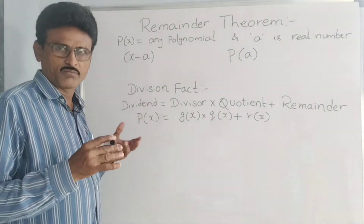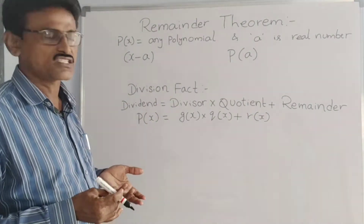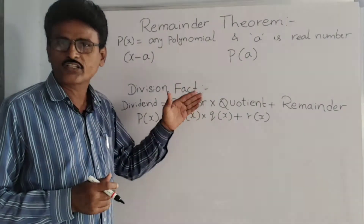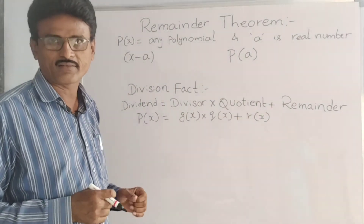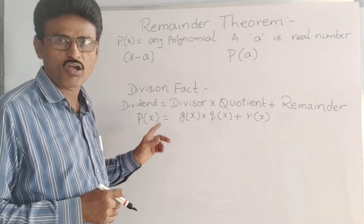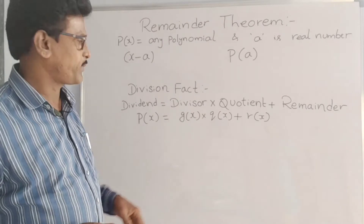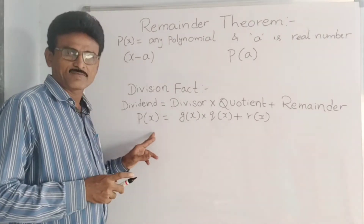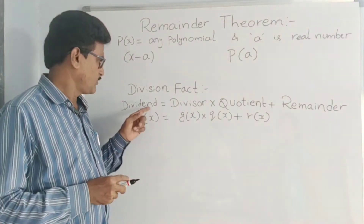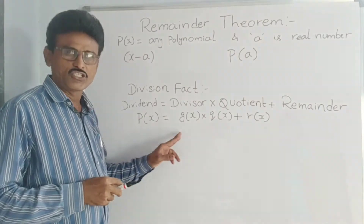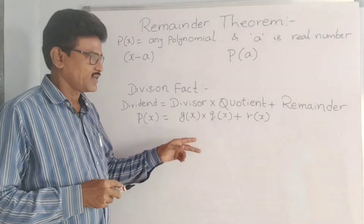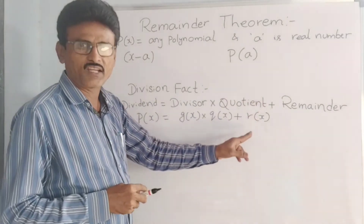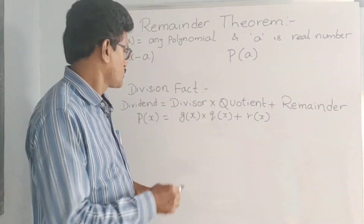Now division fact. From childhood we are studying about this. Dividend equal to divisor into quotient plus remainder. In this, P of x is the polynomial dividend. G of x is the divisor. The quotient is Q of x. And remainder we denote by R of x. So P of x equal to G of x into Q of x plus R of x.